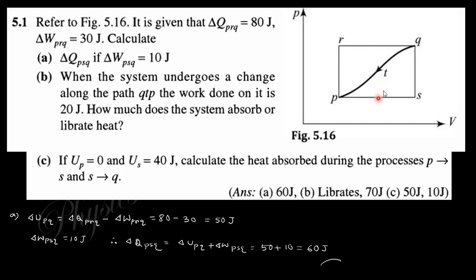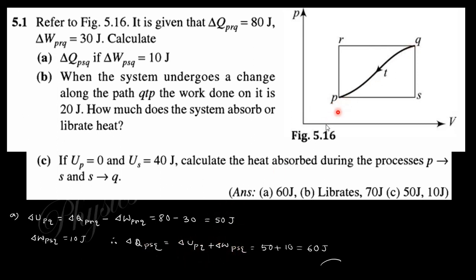Delta U equals heat change minus work done, which gives 80 - 30 = 50 joules. For path PSQ, delta Q equals delta U plus delta W = 50 + 10 = 60 joules.